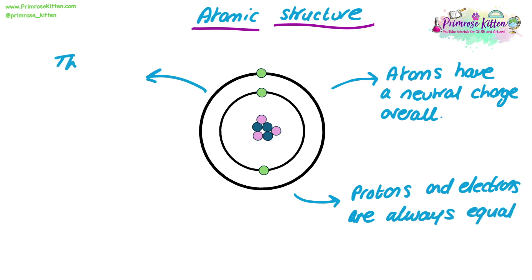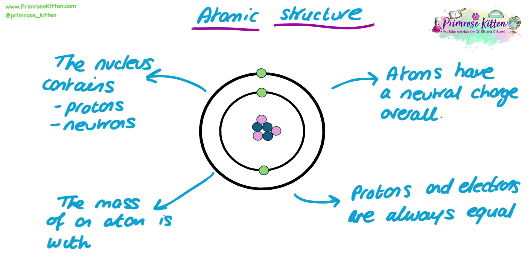Within the nucleus, there are two types of subatomic particles. There are protons and neutrons. Both have a mass of 1, but they have different charges. Protons have +1, neutrons have 0. Therefore, the nucleus is positive overall. The mass of an atom is concentrated within the nucleus. This is because protons and neutrons have a mass of 1, and electrons, located on the outer shells, only have a mass of 1/2000.